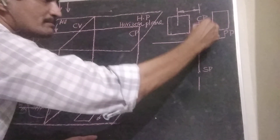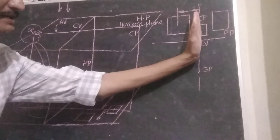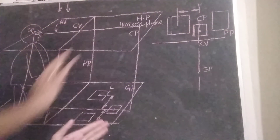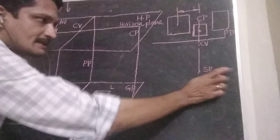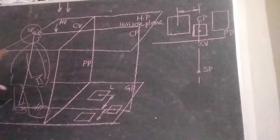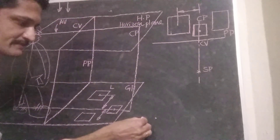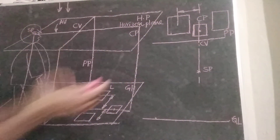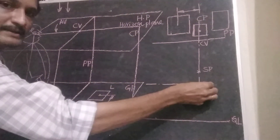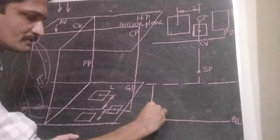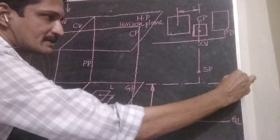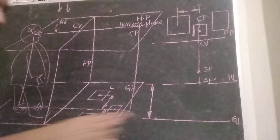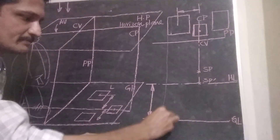This is the center of the object line on the center of the object. In this concept, the top view represents the top view. This is the front view — the front view represents the ground line and the horizontal line. This represents the ground line. The horizontal line represents the horizontal line. The front view represents the base, and here it depends on the vertical line.